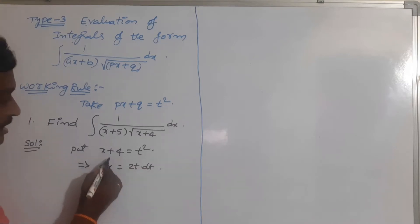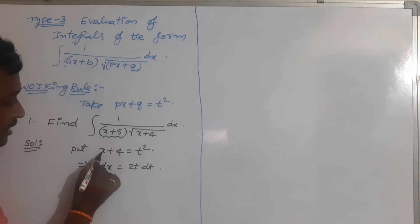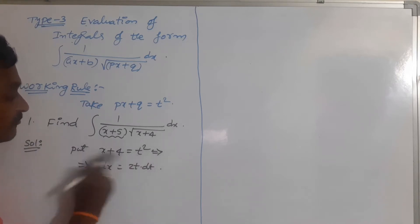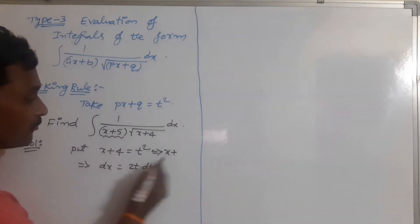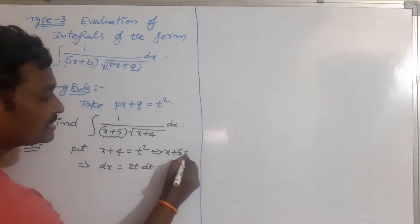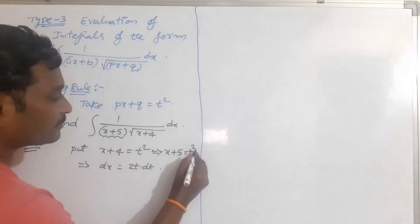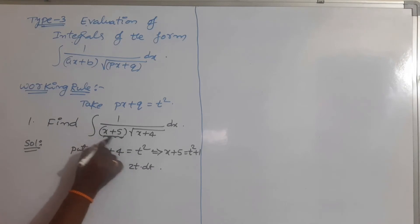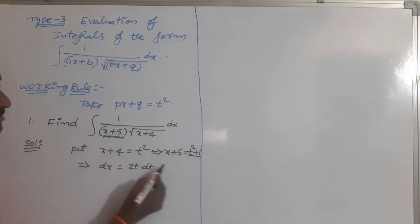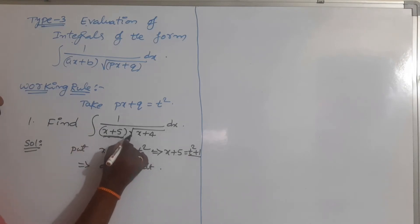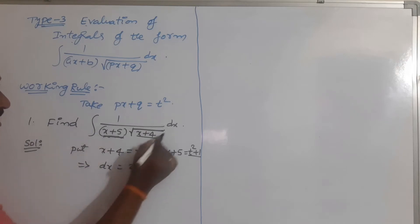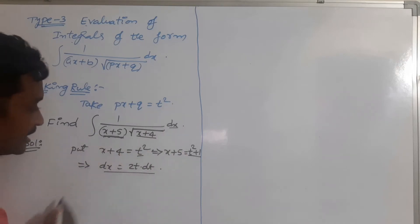We observe that here we have x + 5. Since we took x + 4 = t squared, add 1 on both sides: x + 4 + 1 = t squared + 1, so x + 5 = t squared + 1. Whenever we have x + 5, replace it by t squared + 1; root over (x + 4) is replaced by t, and dx is replaced by 2t dt.